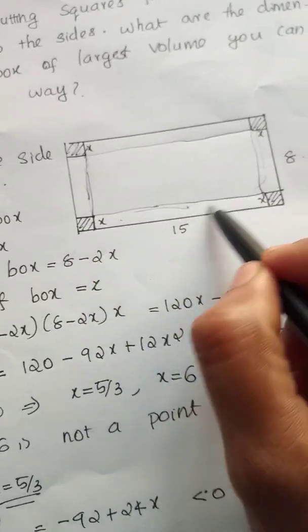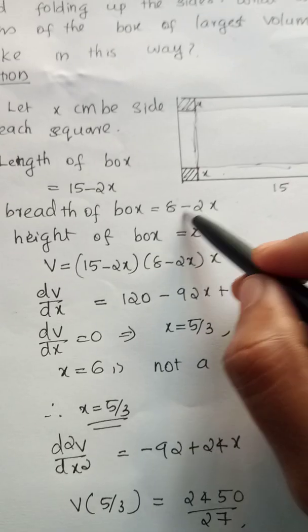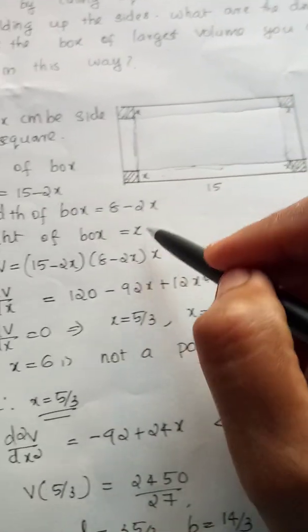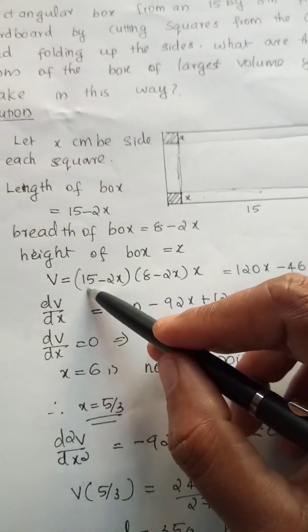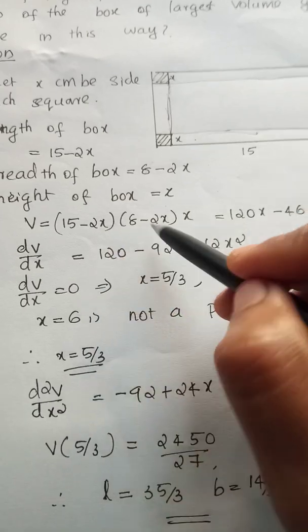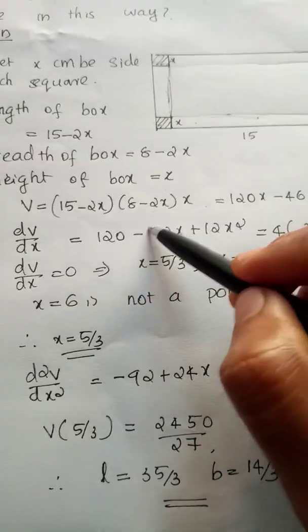Let x be the side of each square. Length of box = 15 - 2x, breadth of box = 8 - 2x, height of box = x. Volume V = (15-2x)(8-2x)x. This is the function.